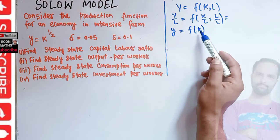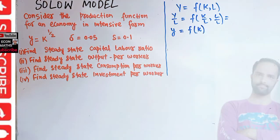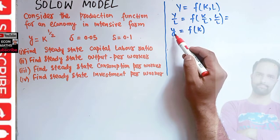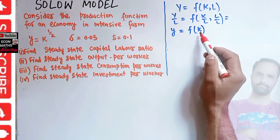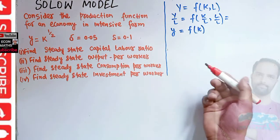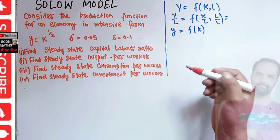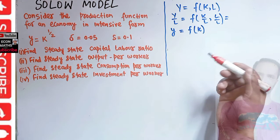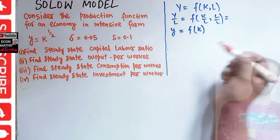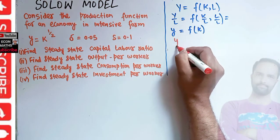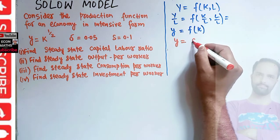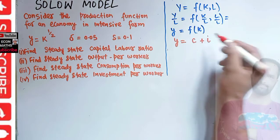Here y denotes the GDP per worker and k is our capital per worker. We also assume that it is a closed economy — there is no government intervention and no foreign sector, meaning no export or import sector. In this case, y — output per worker — will be equal to consumption per worker plus investment per worker.